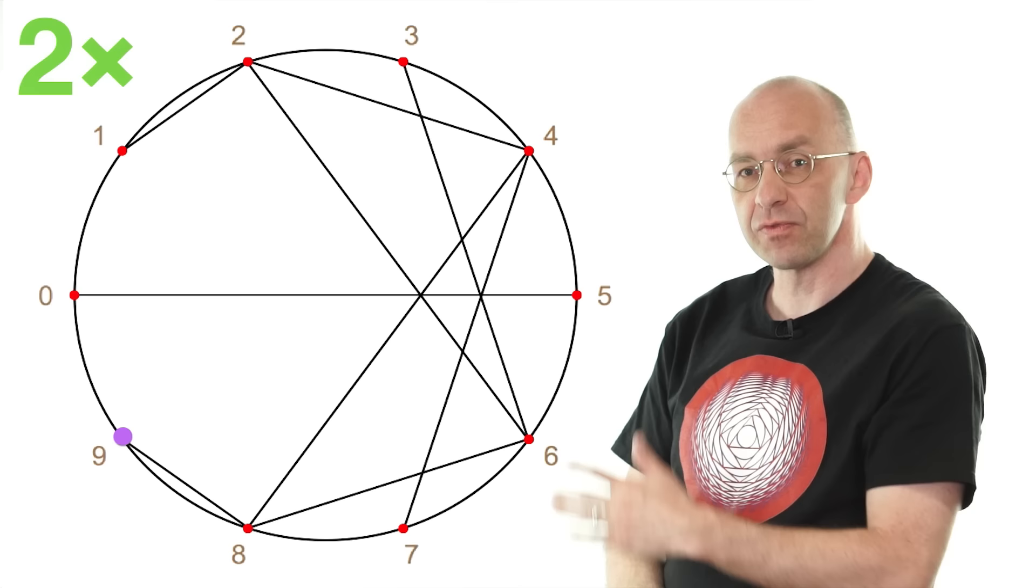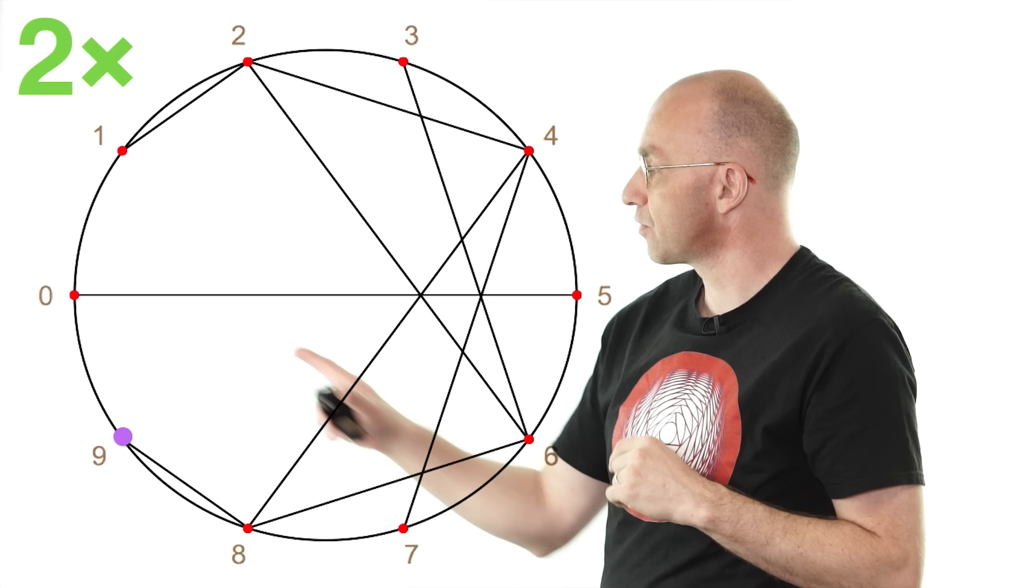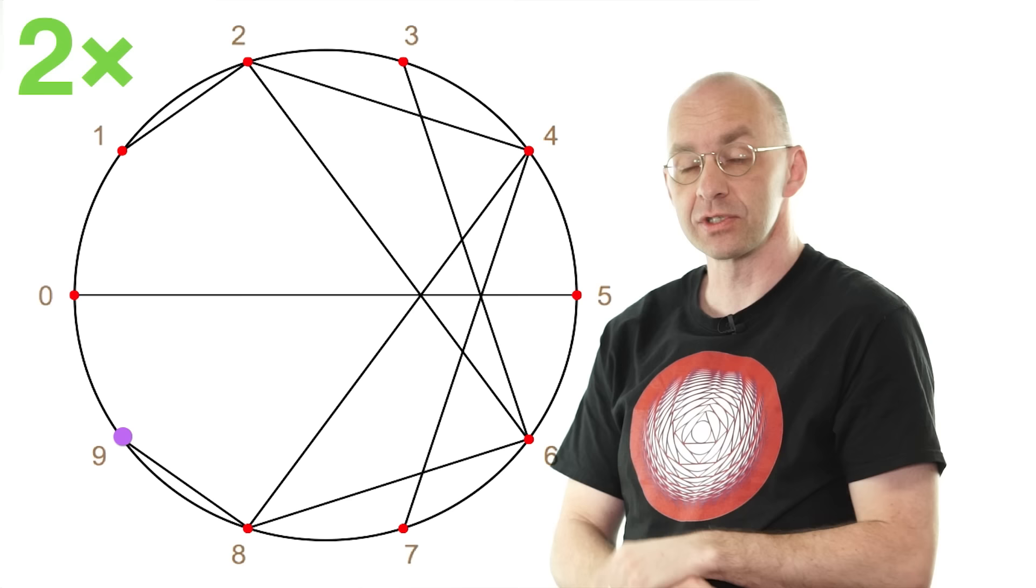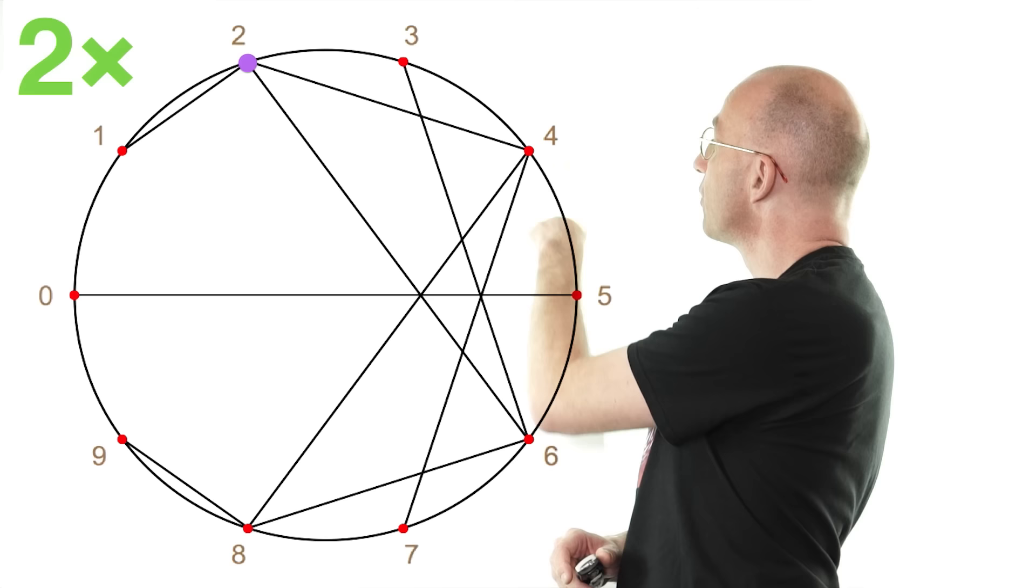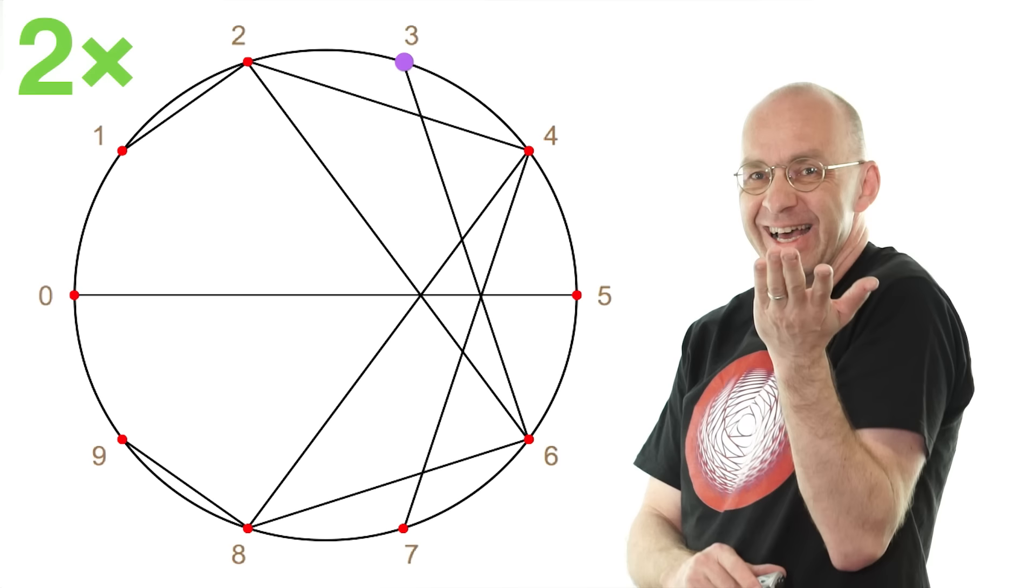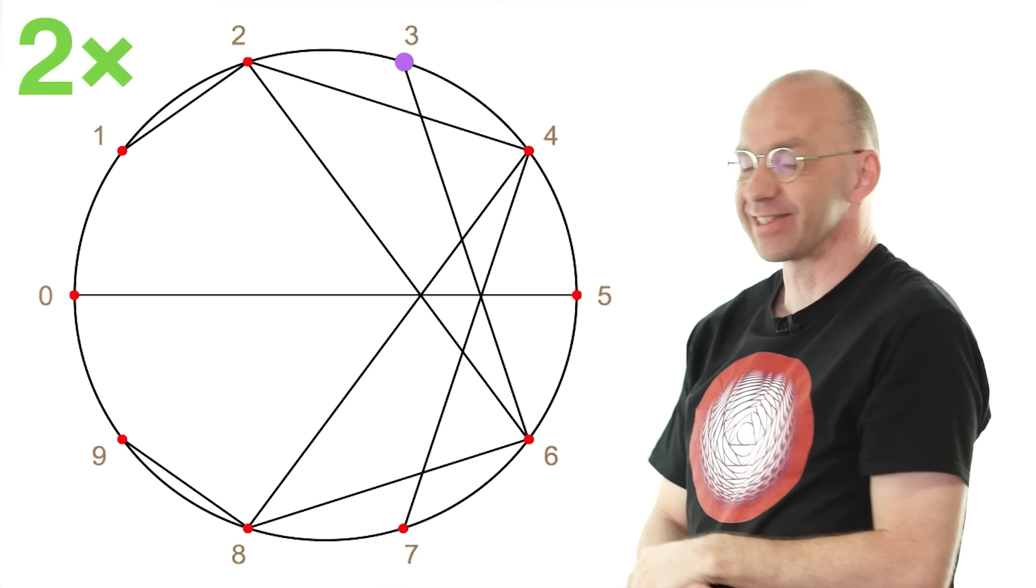And then you're at 9 and you've pretty much gone all the way around. Now you could go on. For example, we could now do 2 times 10, 2 times 11, 2 times 12 and draw in those connections. But actually, the connections are going to be exactly the ones we've already drawn, so we can actually stop here. Just to illustrate, let's go up to 2 times 12, which is 24, which corresponds to the 4, and that connection's already there. And 2 times 13 is 26, and we've already got the 6.